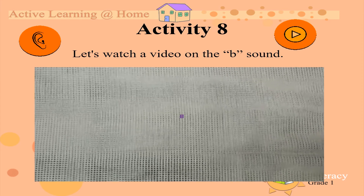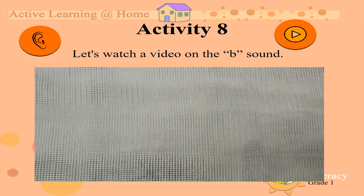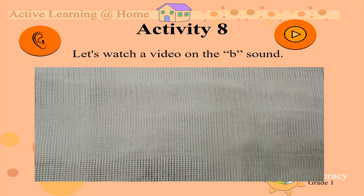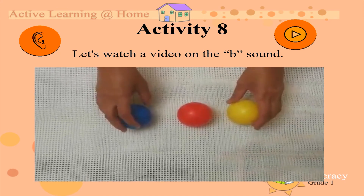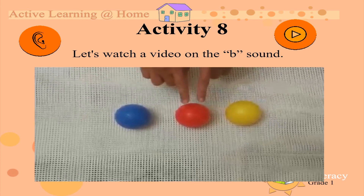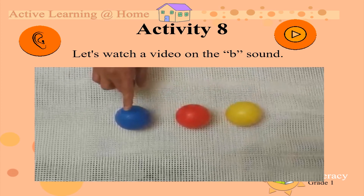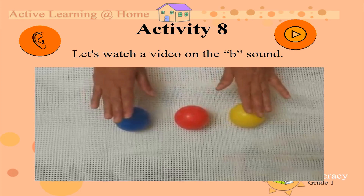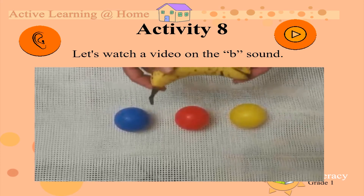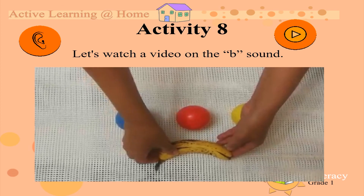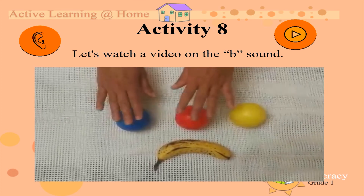Hello children. Today we are going to do the B sound, but we are going to integrate it with a few other skills you've learnt along the way. The first thing we're going to look at is balls. Here are the balls, and if you remember, they are the primary colours — yellow, red, and blue. We count one, two, three, and we say ball. Can you say it with me? Ball. Well done. Next we're going to look at a banana. This word also begins with B. Banana. Say it with me: banana. Ball.